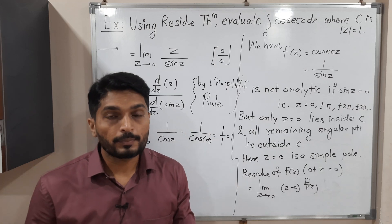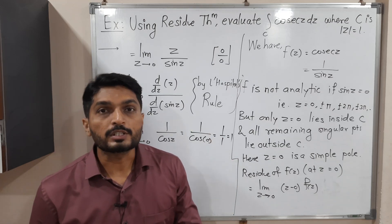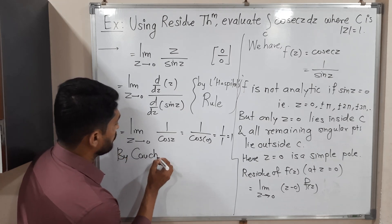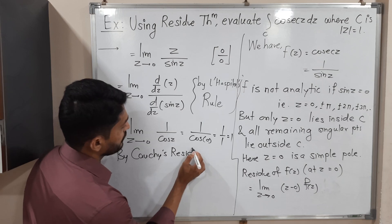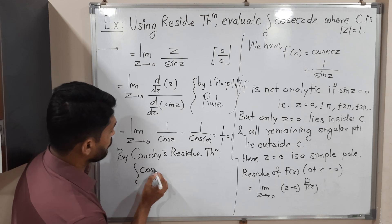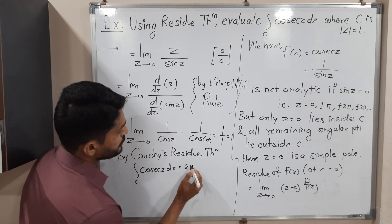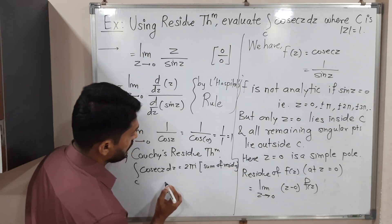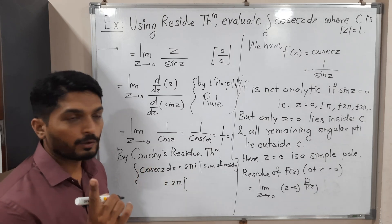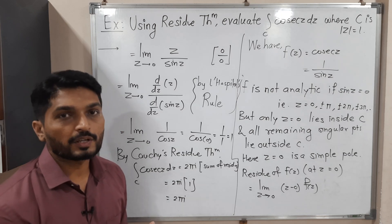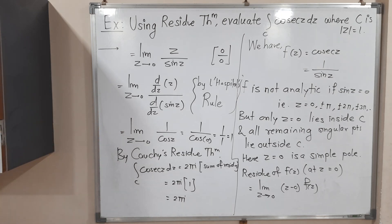We had only one singular point lying inside C, and the residue at that point is 1. Applying Cauchy's residue theorem: the integration over C of cosec(z) dz = 2πi times the sum of residues = 2πi × 1 = 2πi. This is the required answer — the value of the integration is 2πi.